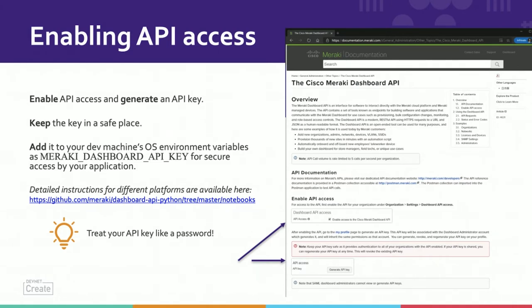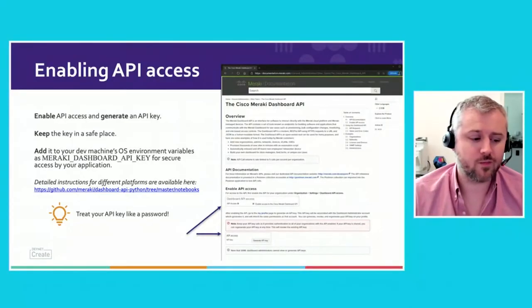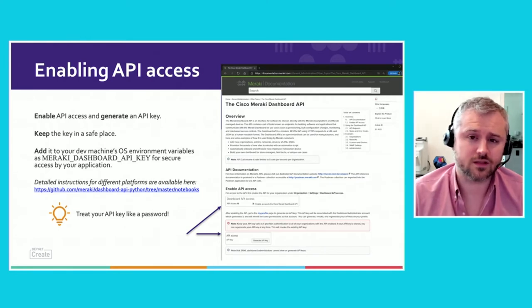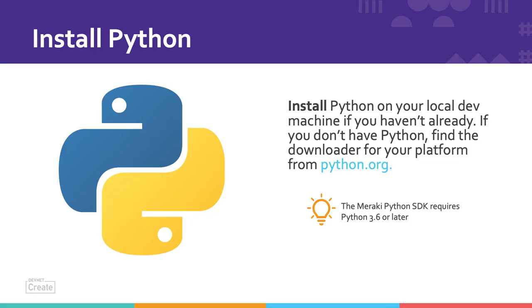This will enable you to write applications without storing the API key itself in your source code, which is a risk if you're ever going to share that with anyone else or store it unencrypted on your computer. The environment variable should be called MERAKI_DASHBOARD_API_KEY, in all capitals. And if you haven't already installed Python on your dev machine, we need at least Python 3.6 to use the Python SDK, though the current installer is 3.8 or later, which is fine.